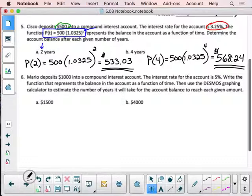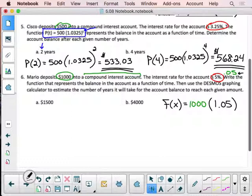Next problem. Mario deposits $1,000 into a compound interest account. Okay, so we know we're starting out with $1,000 and we're putting it into a compound interest account. That's important. Your interest rate is 5%, so don't forget that. That's 0.05, right? All right. And write the function that represents the balance in the account as a function of time. Then use Desmos in the graphing calculator to estimate the number of years it will take for the account balance to reach each of the given amounts. So, on your sheet, you have a place for you to write this function. Our starting amount was $1,000. Don't forget that. $1,000. And we are multiplying by 1.05. Remember, that's at 5%, but you've got to add 1 to a power of x.